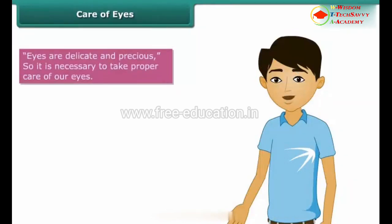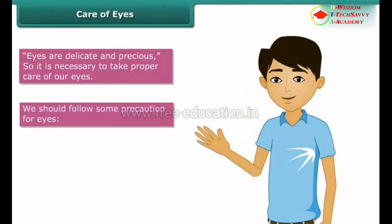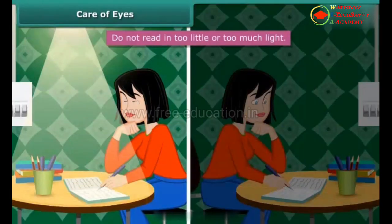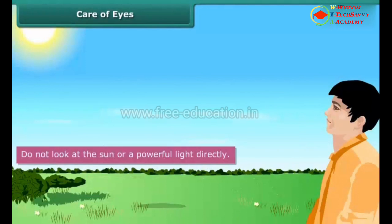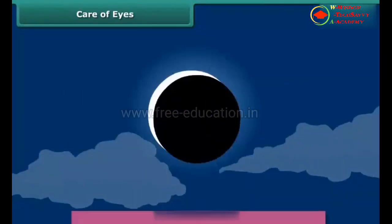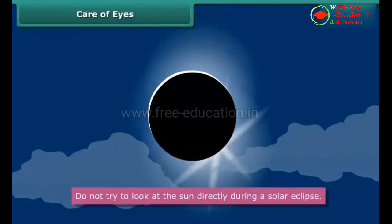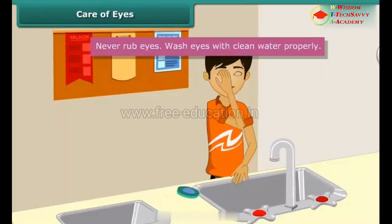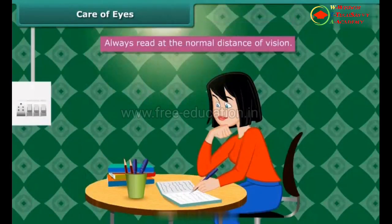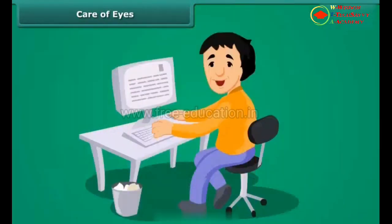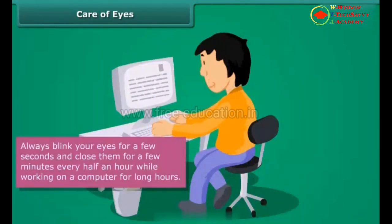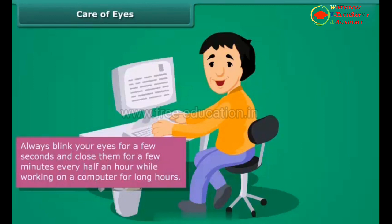Eyes are delicate and precious, so it is necessary to take proper care of our eyes. We should follow some precautions: Do not read in too little or too much light. Do not look at the sun or a powerful light directly. Do not try to look at the sun directly during a solar eclipse. Never rub your eyes. Wash eyes with clean water properly. Always read at the normal distance of vision. Blink your eyes and close them for a few minutes every half hour while working on a computer for long hours.